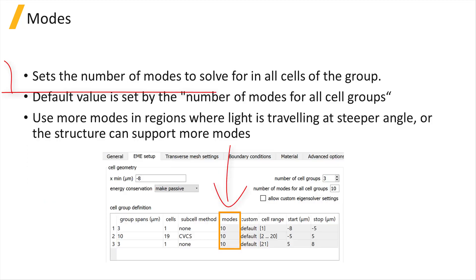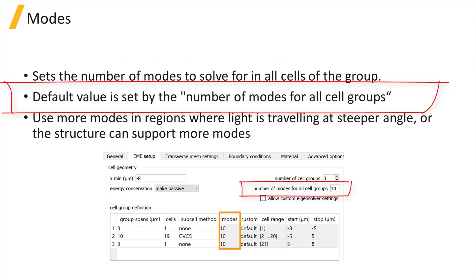Modes sets the number of modes to solve for in all cells of the group. Its default value is set by the number of modes for all cell groups unless Allow Custom Eigensolver Settings is checked.